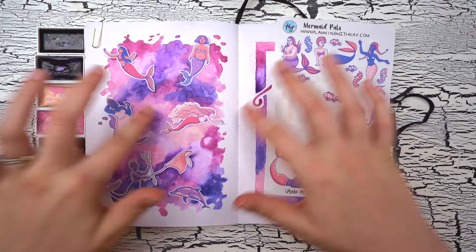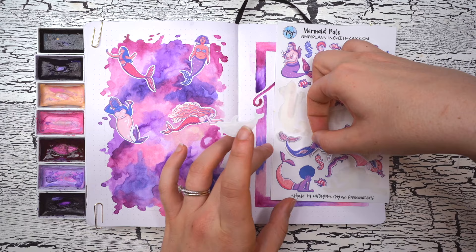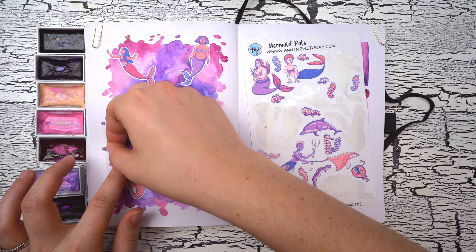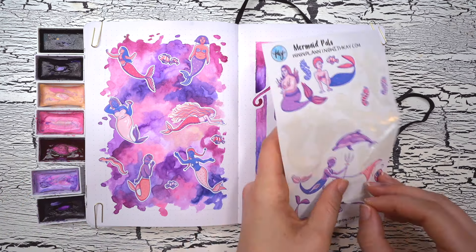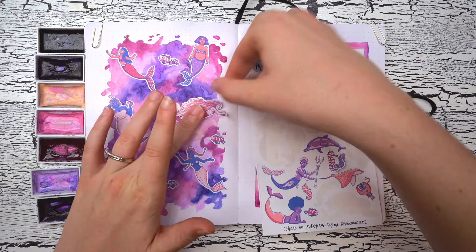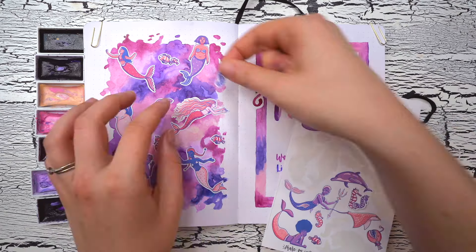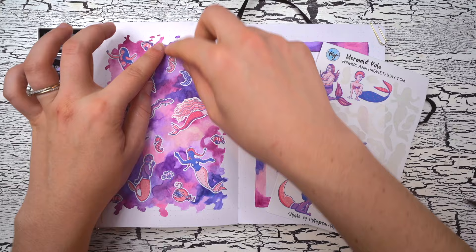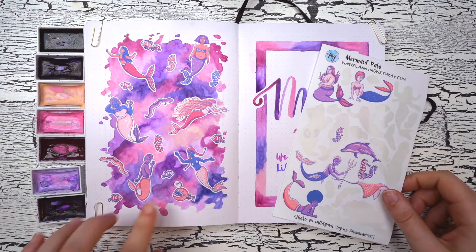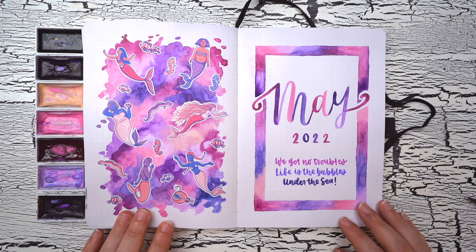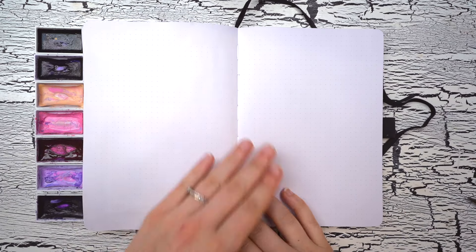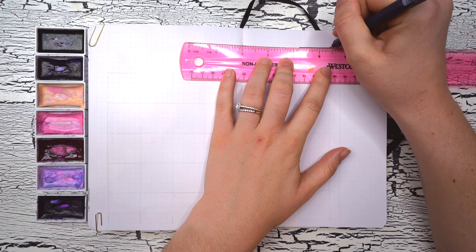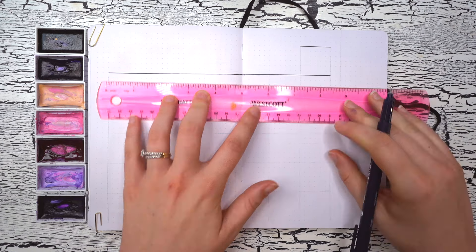Now finally, I'm finishing this cover spread off by sticking in a bunch of my mermaid pal stickers all over the left page. And I just really love how this turned out. These mermaid illustrations are really special to me. I'm just really proud of them. I love all the different body types and genders, skin colors, and personalities. They were so fun to draw and they all look so beautiful together here on this page.